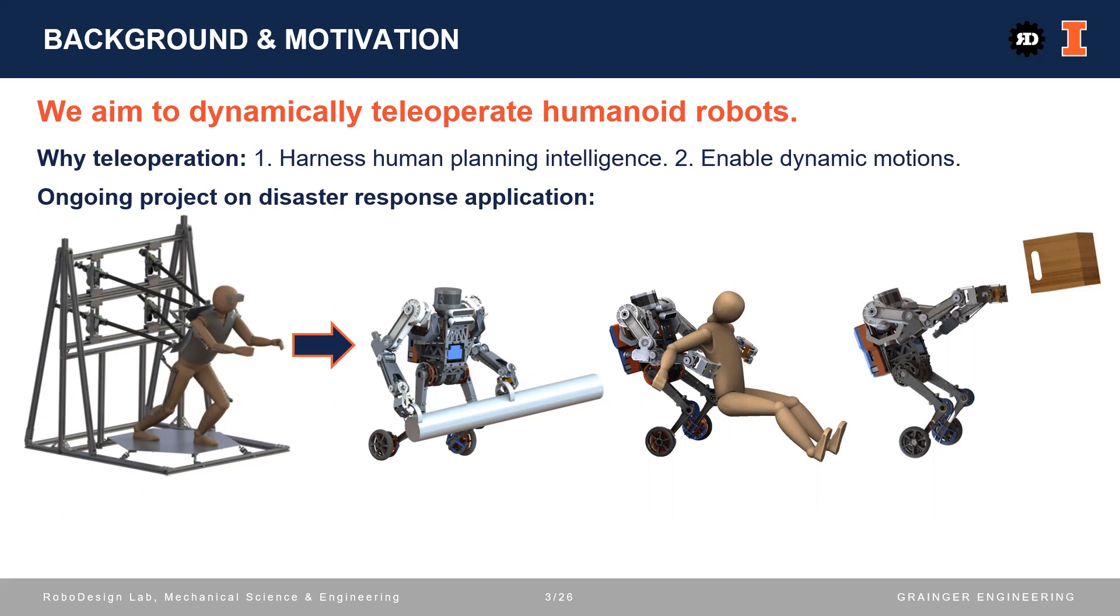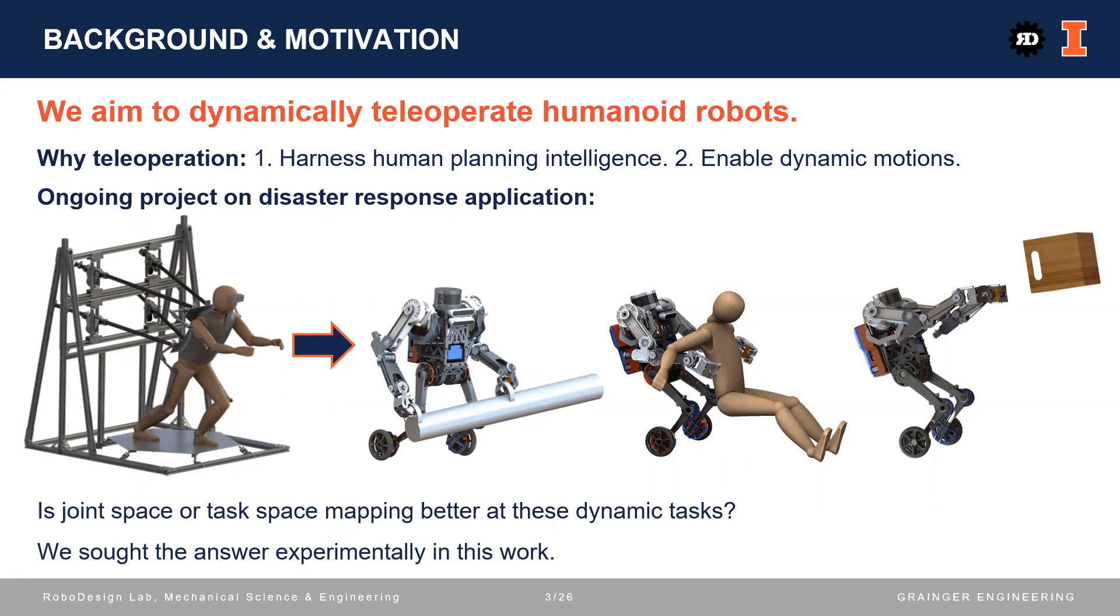These tasks involve dynamic arm movements, so a natural question to ask is, which of the two most obvious mappings for arm teleoperation will be better at these tasks, joint space or task space mapping? Since the system consists of a human and a machine, it is challenging to analyze the system purely in theory or simulation. So we chose to seek the answer experimentally.